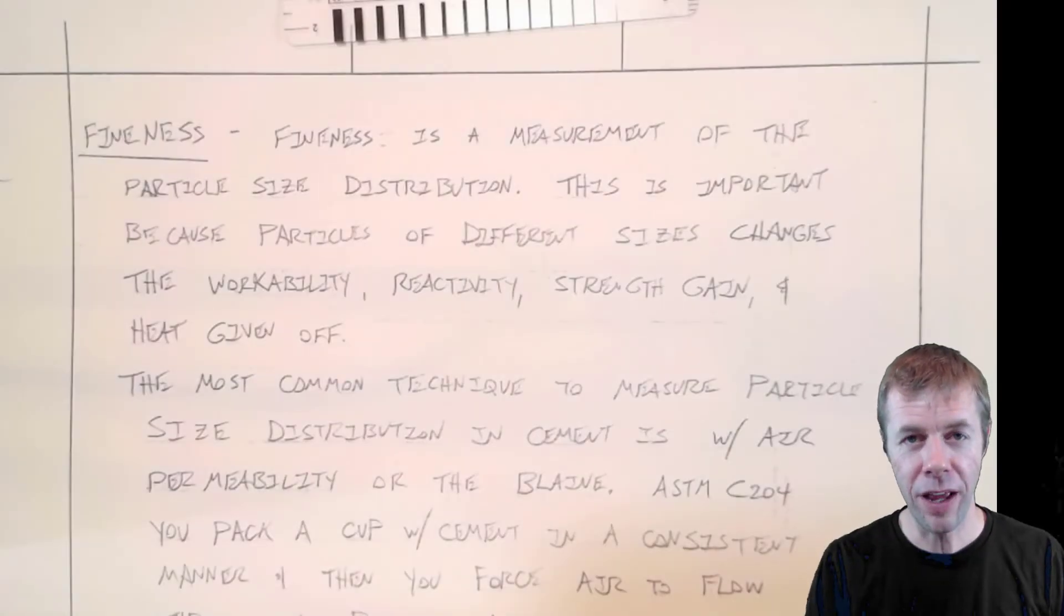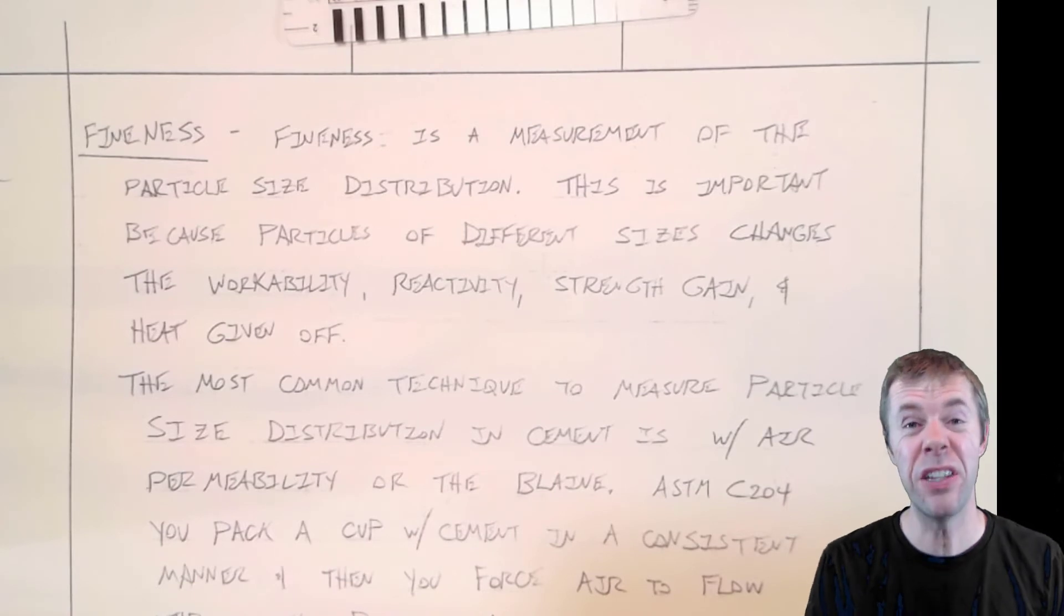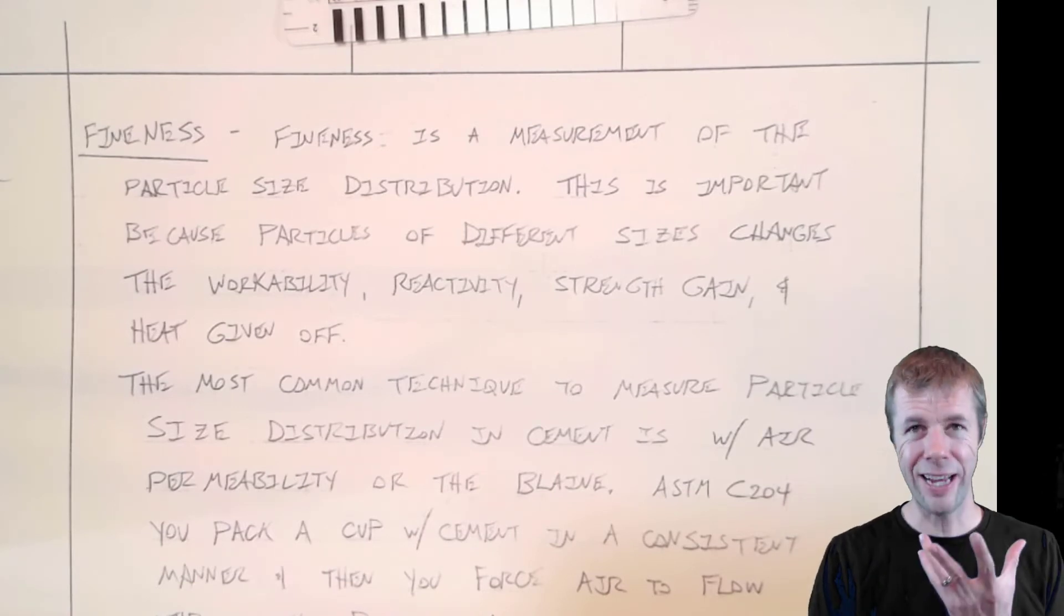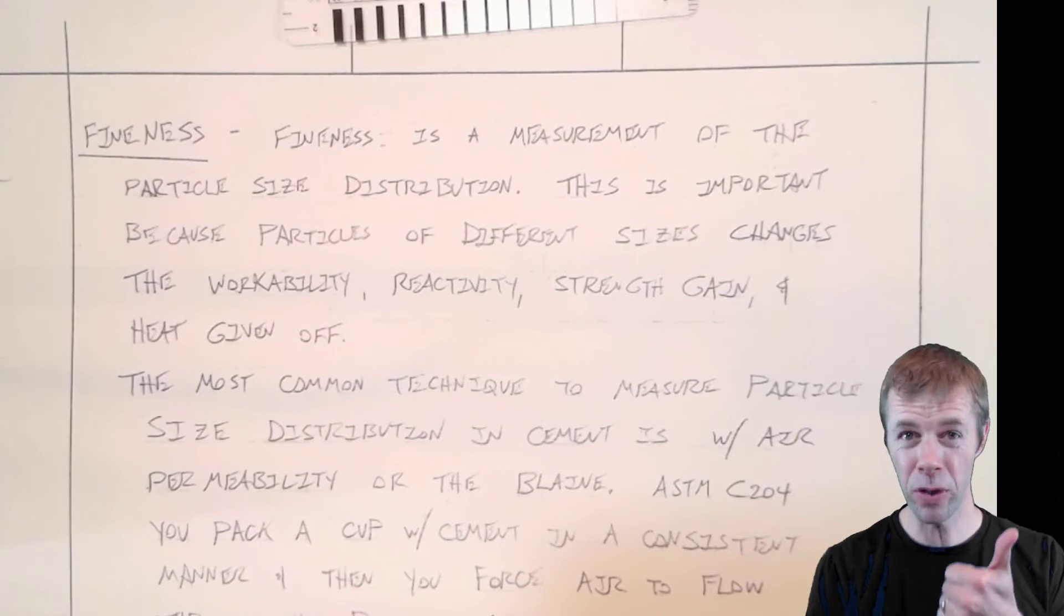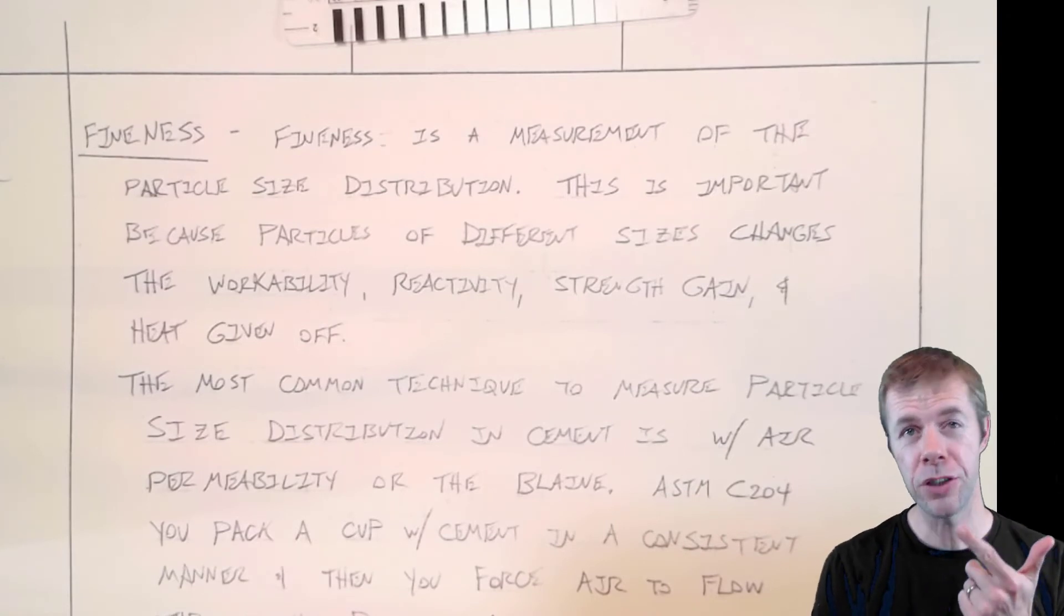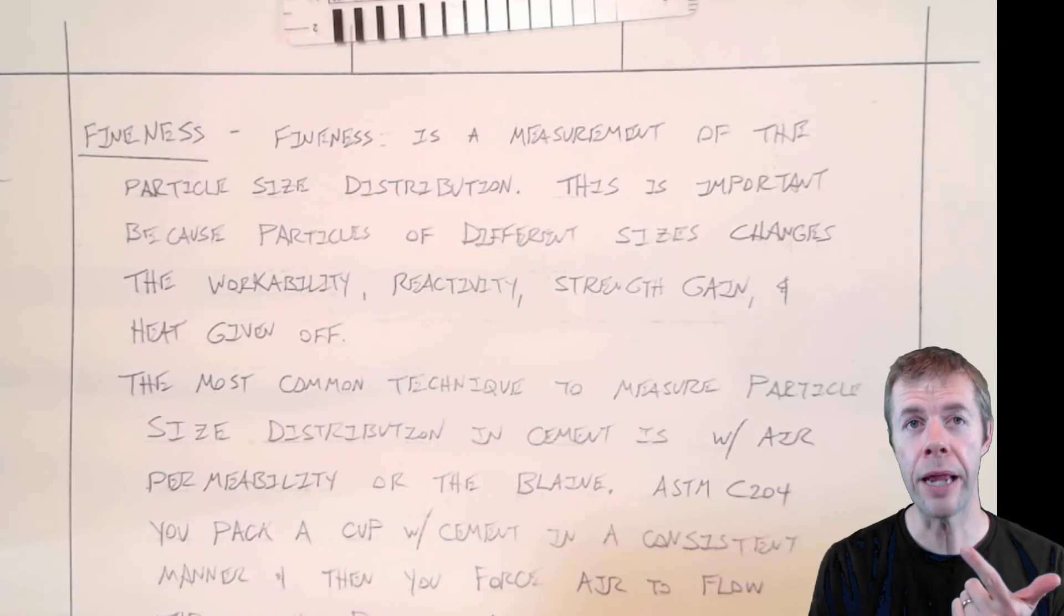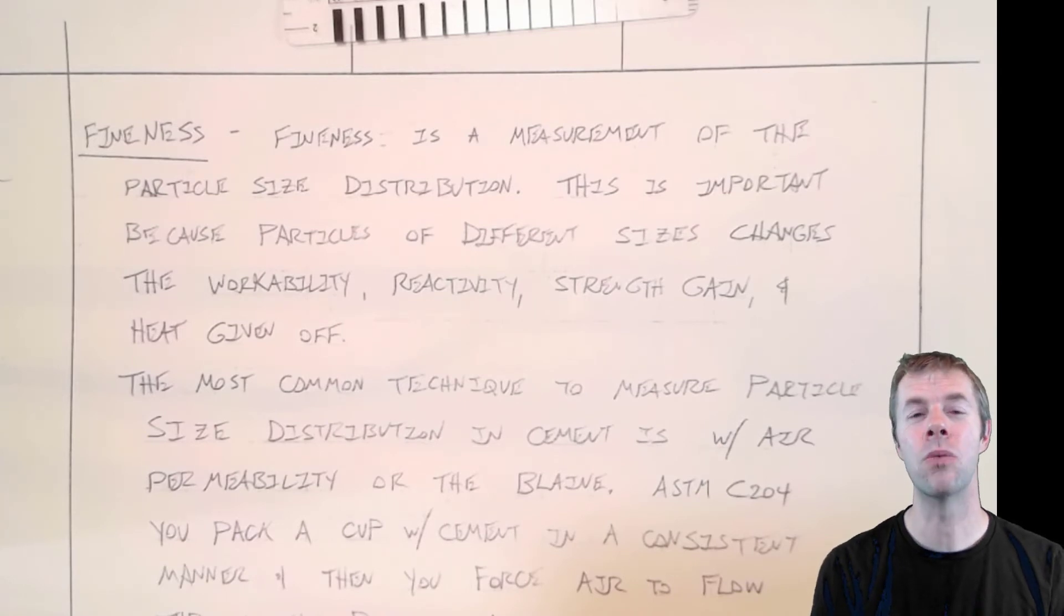The last property I'm going to talk about today is the fineness. The fineness is a measurement of the particle size distribution of the cement. This is important because particles of different sizes change lots of different properties of concrete. It changes the workability or flowability, the reactivity and strength gain, and also the heat given off. All of these things are attributed to particle size distribution. So does it have to be right or does it just need to be consistent? Consistent.